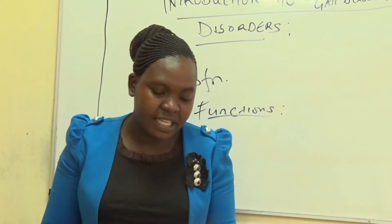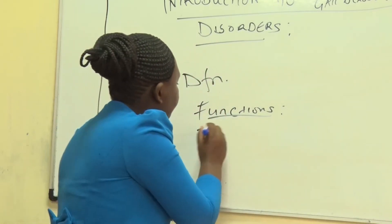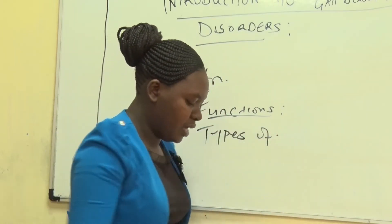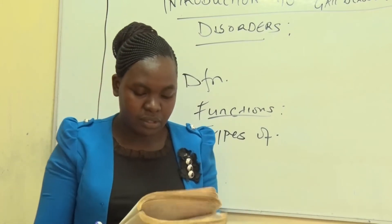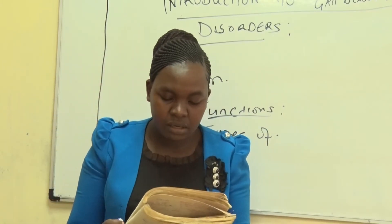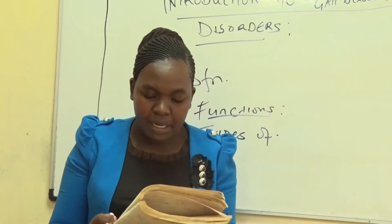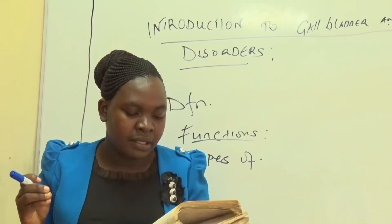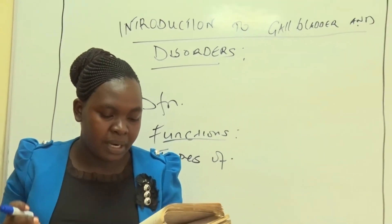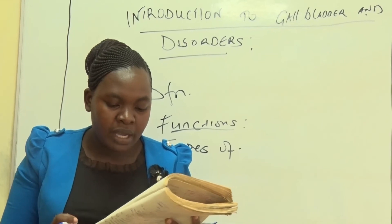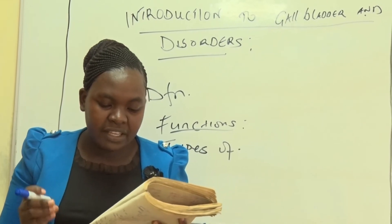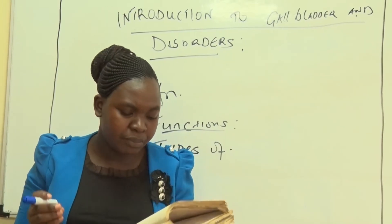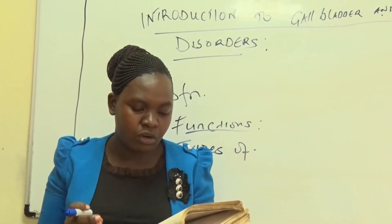There are types of gallstones. The first is cholesterol stones — this is the most common type of gallstone, and it is yellow in colour.